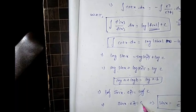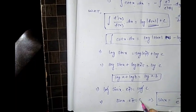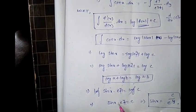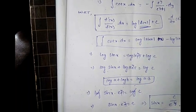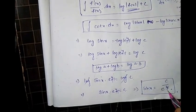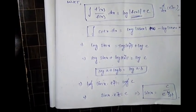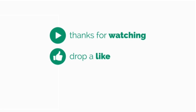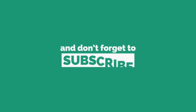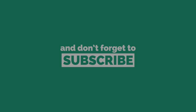Cancelling log on both sides, the general solution is sinx · (eʸ+1) = c.